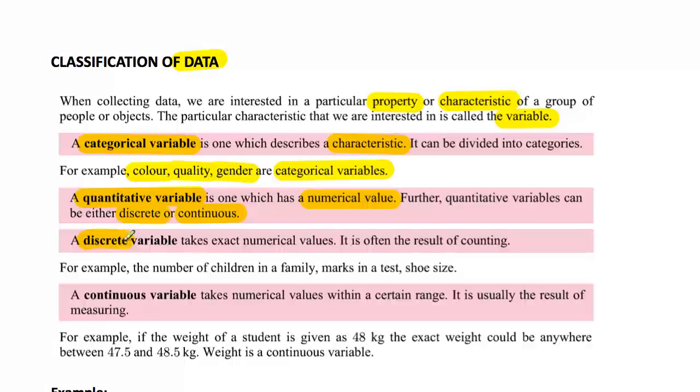Discrete variables have got exact number of variables. They can be counted. Examples of quantitative variables that are discrete would be things like the number of children in a family or what your mark was in a test, your shoe size. All of those can be counted and given an exact value.